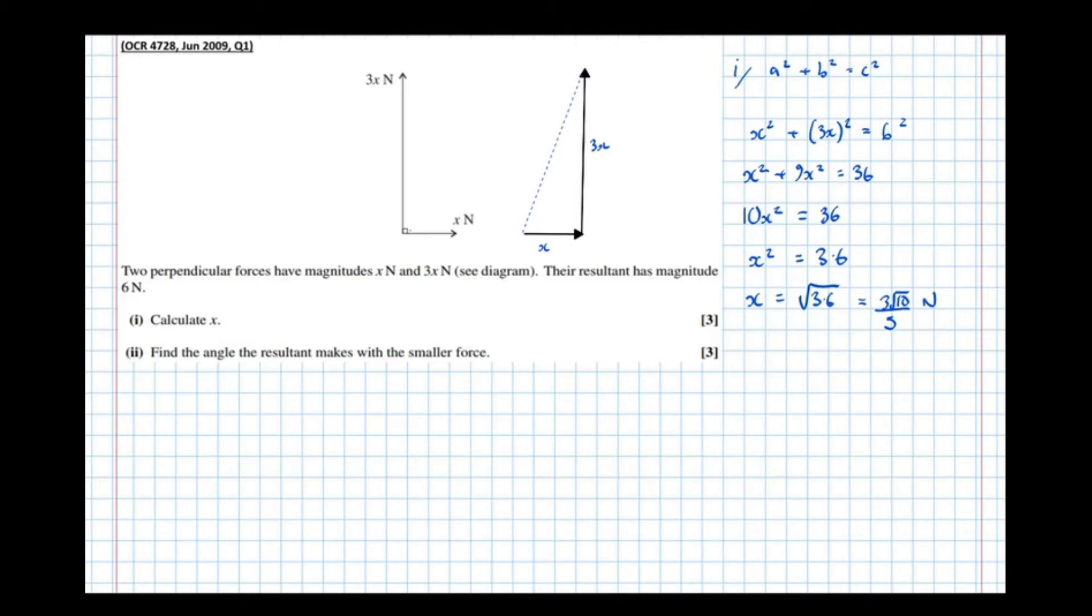So then it says, find the angle that the resultant makes with the smaller force. So the smaller force is the x newtons. The larger force is the 3x newtons. So smaller force is here. Larger force is here. So find the angle the resultant makes with the smaller force. It's asking for this angle here. So let's call this alpha.